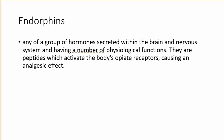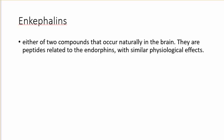Endorphins are things that can be released in our body — like when somebody is giving birth or running a marathon. After a certain amount of time running, these endorphins are released, and people don't feel the pain as much. These actually activate the body's opioid receptors naturally and cause analgesic effects. Enkephalins are closely related — they are peptides very similar to endorphins.